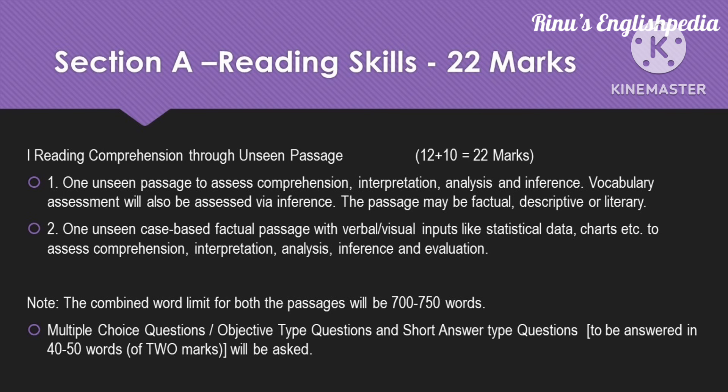First is the reading section, second is the writing section, and the third is the literature section. Section A is the reading skills, with a weightage of 22 marks. There will be two questions — the first question will be of 10 marks and the second will be of 10 marks. The first passage tests comprehension ability, interpretation, analysis, and inference, and vocabulary assessment through inference. The passage can be either factual, descriptive, or literary.